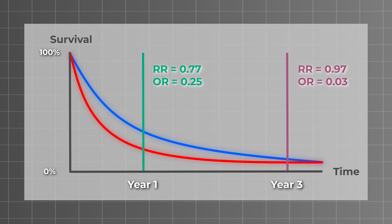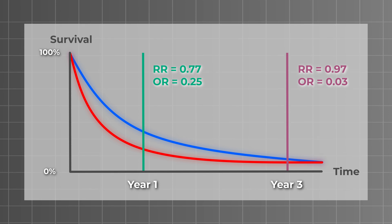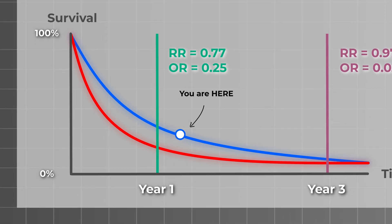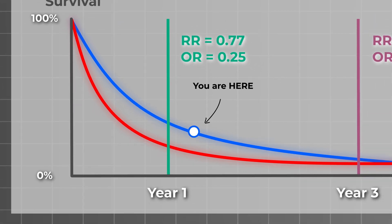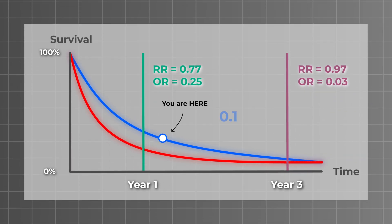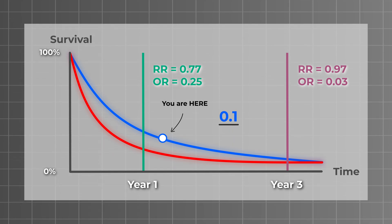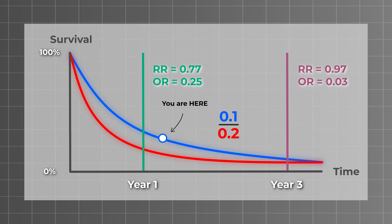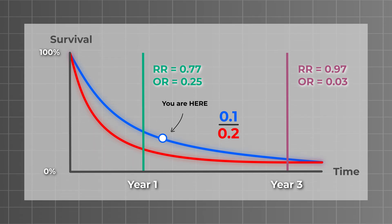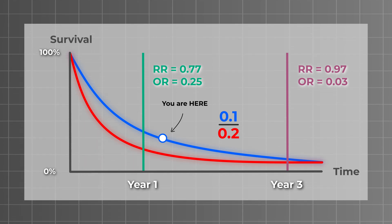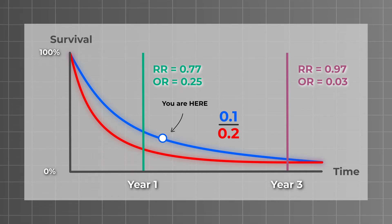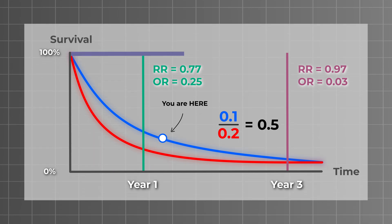To understand the hazard, imagine you're a patient in the new treatment group and you ask yourself, given I've survived up until now, what's the probability I'll die within the next month? Let's say the hazard of dying in the new treatment group is 0.1 and the hazard of dying in the standard of care group is 0.2. With this information, we can then calculate the ratio of these two hazards, so 0.1 divided by 0.2, which gives us a hazard ratio of 0.5.